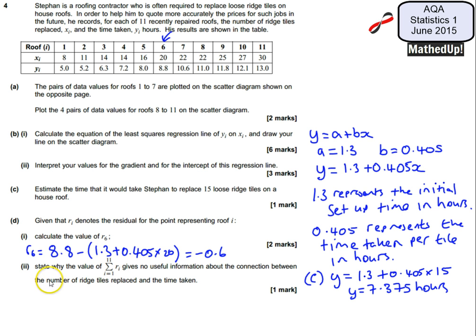Part 2 says state why the value of the summation of R 1 to 11 gives no useful information about the connection between the number of ridge tiles replaced and the time taken. Well because of the way the regression line is calculated the sum of the residuals is always going to be equal to 0, so we can just say always equals 0 and therefore it's not going to tell us anything that's useful, it's something that we already know. I hope that was useful, thanks very much for joining me, I will see you next time.